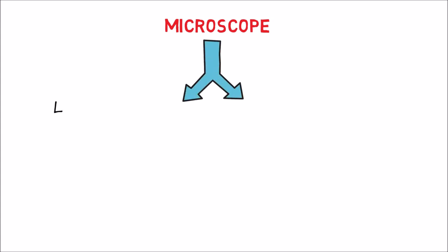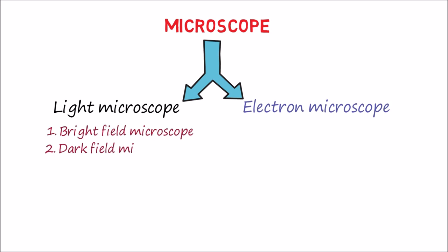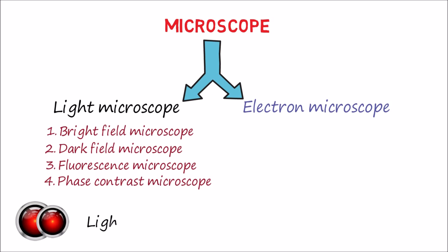Microscopes are of two categories: light microscope and electron microscope. The light microscope includes bright field microscope, dark field microscope, fluorescence microscope, and phase contrast microscope. In light microscopy, magnification is obtained by a set of optical lenses.